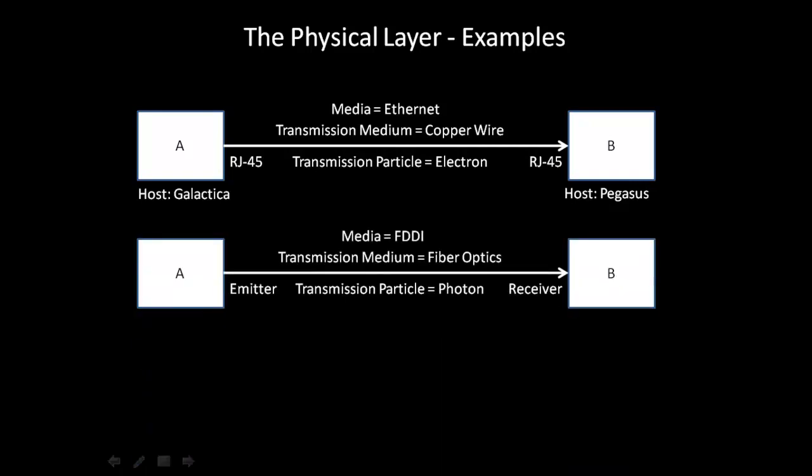In the next example, we're using fiber. The media is FDDI and the transmission medium is fiber optics. The transmission particle is the photon — no longer the electron, since we're dealing with light. In this case, host A has an emitter that fires off a stream of photons to host B, which has a receiver.